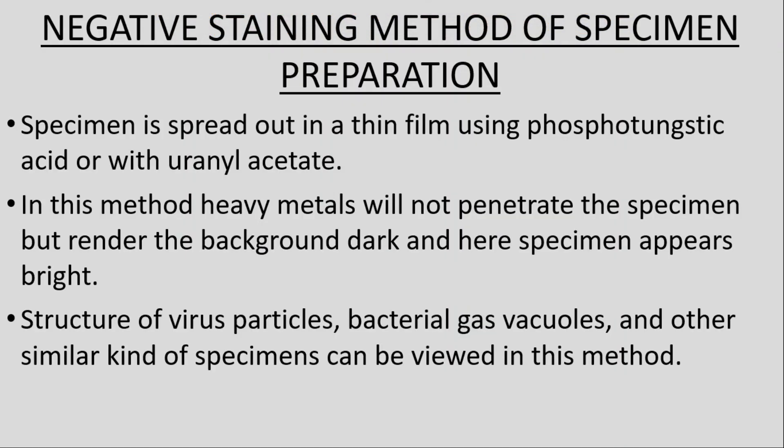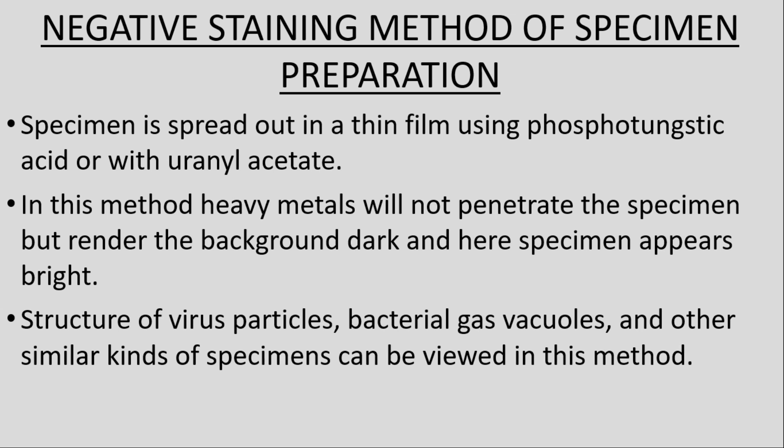Negative staining method of specimen preparation. The specimen is spread in a thin film using phosphotungstic acid or uranyl acetate. In this method, heavy metals do not penetrate the specimen but render the background dark, and the specimen appears bright in color. Structures such as virus particles, bacterial gas vacuoles, and similar specimens can be viewed using this method.